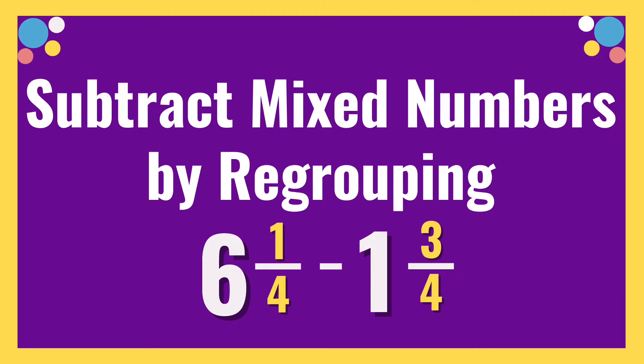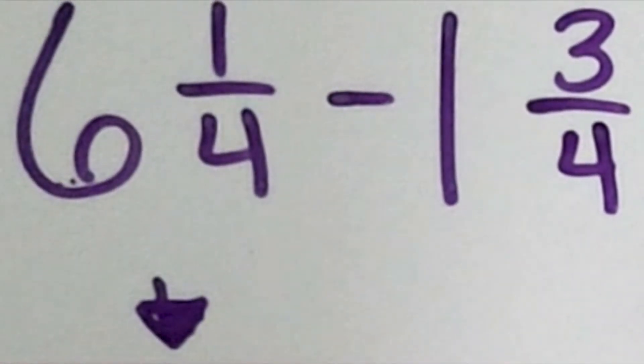Another way to subtract these mixed numbers is to use regrouping. So instead of renaming it as a fraction greater than one, we can regroup six wholes into five and four-fourths.